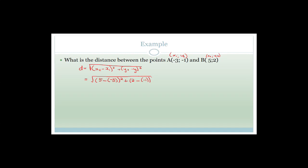Students often get it wrong by swapping the x's and y's. Working it out: 5 plus 3 is 8, squared is 64; 2 plus 1 is 3, squared is 9. So that's the square root of 64 plus 9, which is the square root of 73.